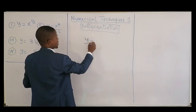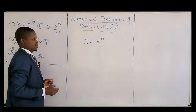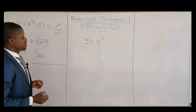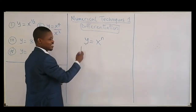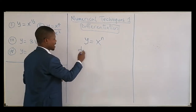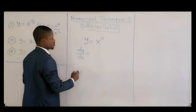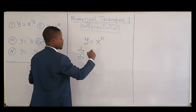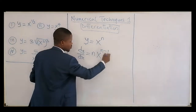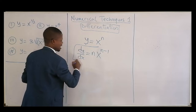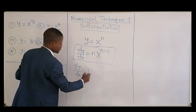If y is equal to x to the power n, the differential coefficient — denoted dy/dx — is equal to the power coming to the front, then you write the base again, and then the power minus one. So that is how to differentiate; dy/dx is called the derivative.